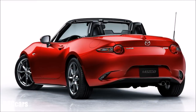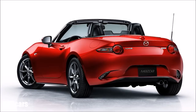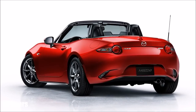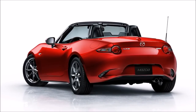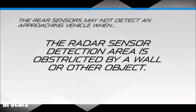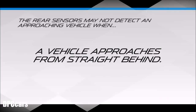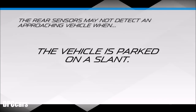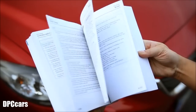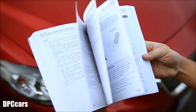Always check the surrounding area before reversing the vehicle because the rear sensors may not detect an approaching vehicle in time to avoid an accident when the radar sensor detection area is obstructed by a wall or other object, a vehicle approaches from straight behind, the vehicle is parked on a slant, or when reversing at 6 miles per hour or faster. For more details, please refer to your owner's manual.